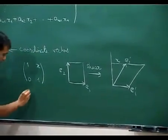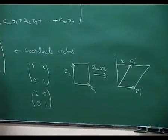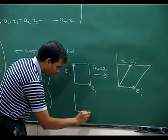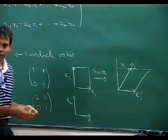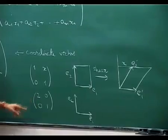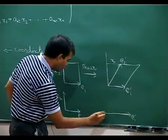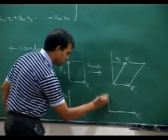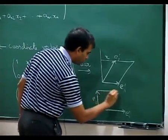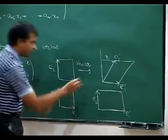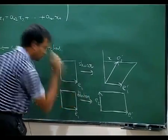Let us look at another example. What about the matrix [2, 0; 0, 1]? What will happen to e1? It will get stretched to 2e1, stretched by a factor of 2, but e2 will remain the same. So this stretches the square into a rectangle. This is called a dilation.